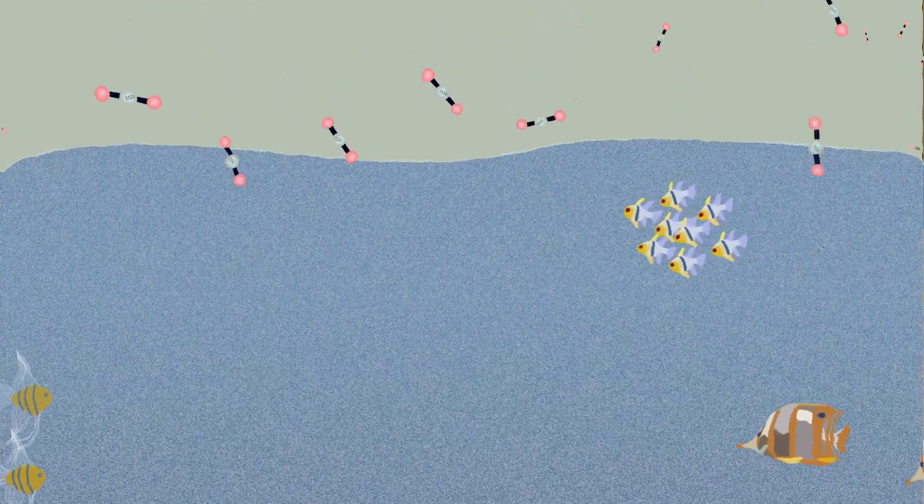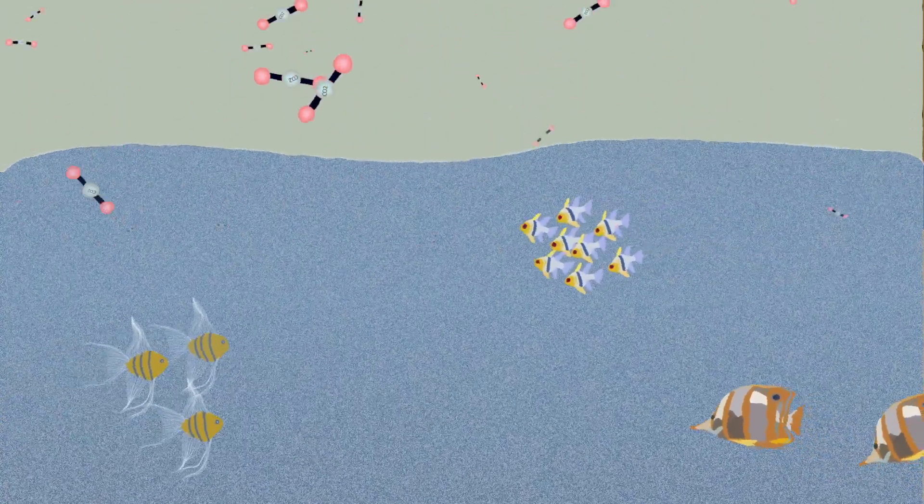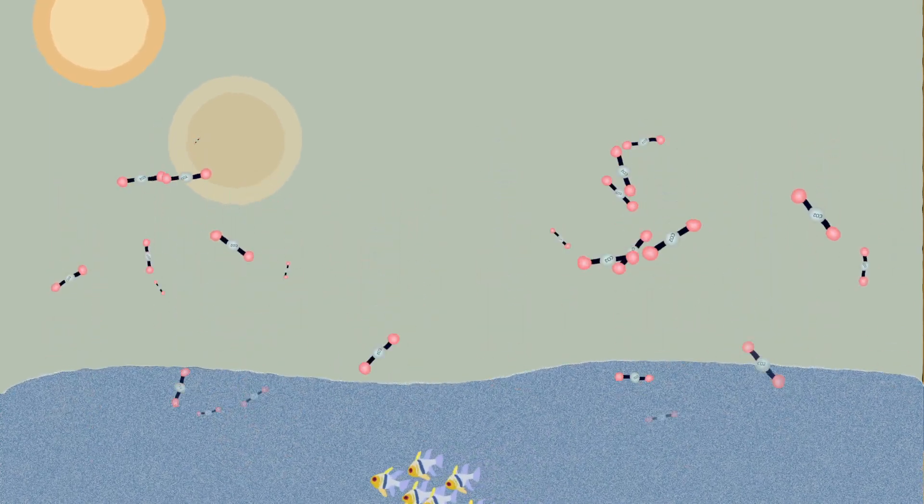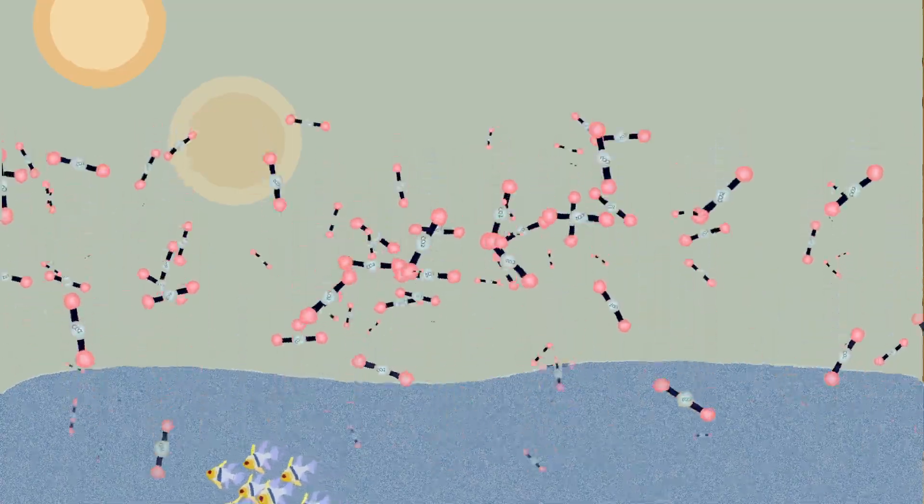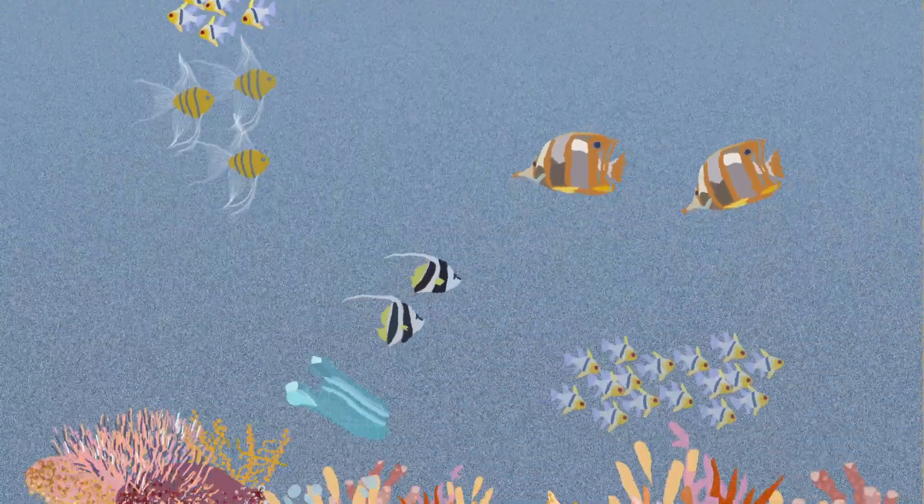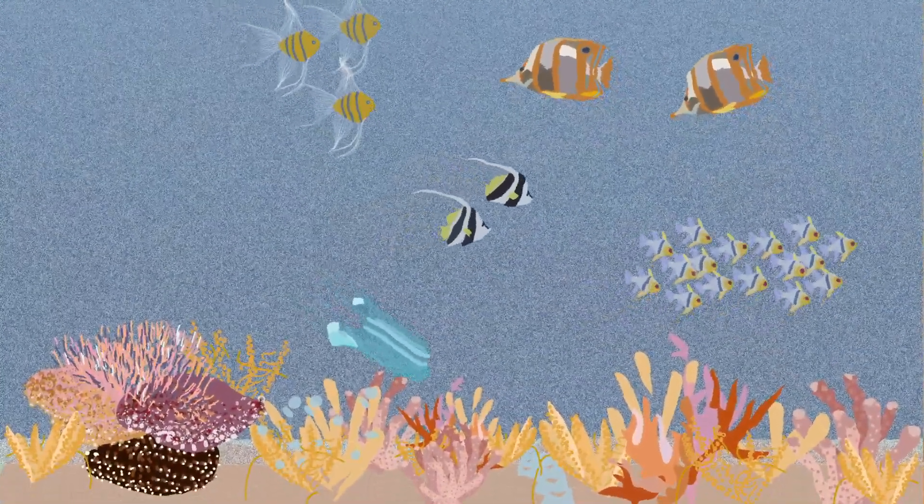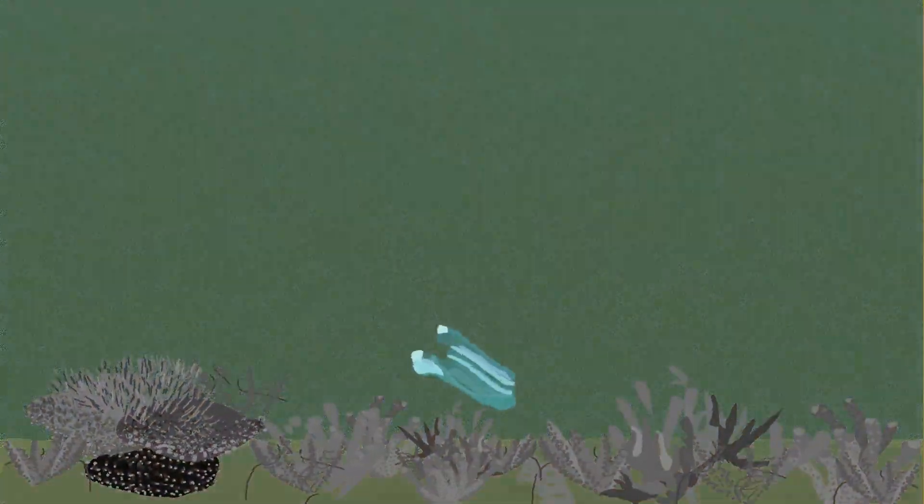Oceans also absorb carbon dioxide from the atmosphere wherever air meets water. As atmospheric carbon dioxide levels go up, the ocean absorbs more carbon dioxide to stay in balance. However, this absorption leads to ocean acidification which threatens marine organisms such as coral and plankton.